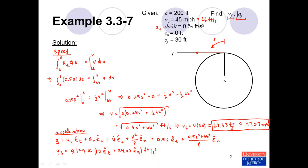That's a vector expression for the acceleration at s equals 30 feet. Ultimately we're asked for the magnitude, which we find via the Pythagorean theorem: we take each component, square them, add them, and take the square root. Taking 15 squared plus 24.03 squared, adding them, and taking the square root, we get a magnitude of approximately 28.3 feet per second squared.